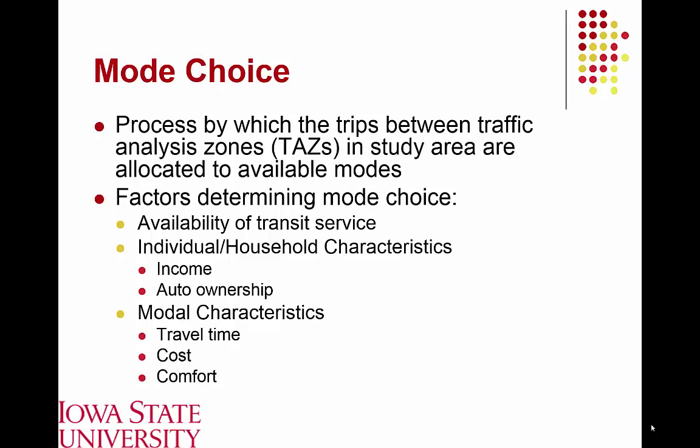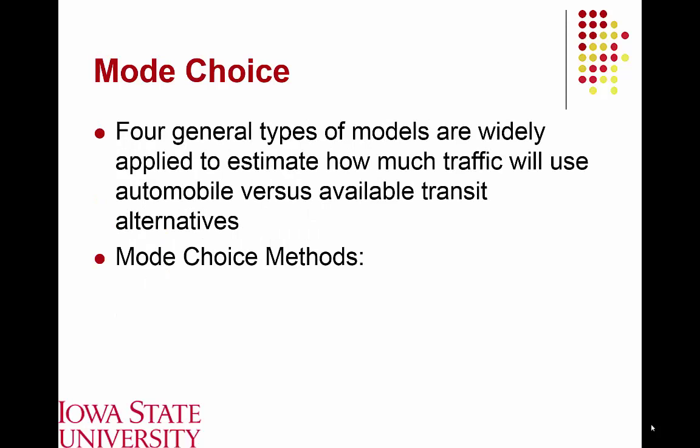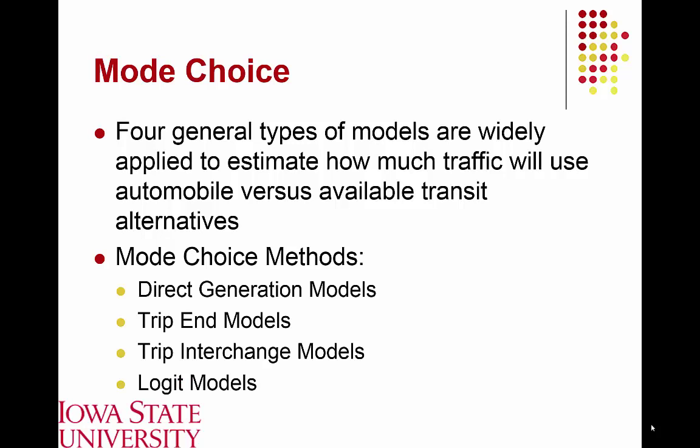Comfort and convenience are also going to play a role in this decision. The text outlines four general types of travel demand models used to model this mode choice decision and estimate what percentage of traffic is going to use automobile versus whatever transit options are available. These four methods are: direct generation models, trip end models, trip interchange models, and logit models.